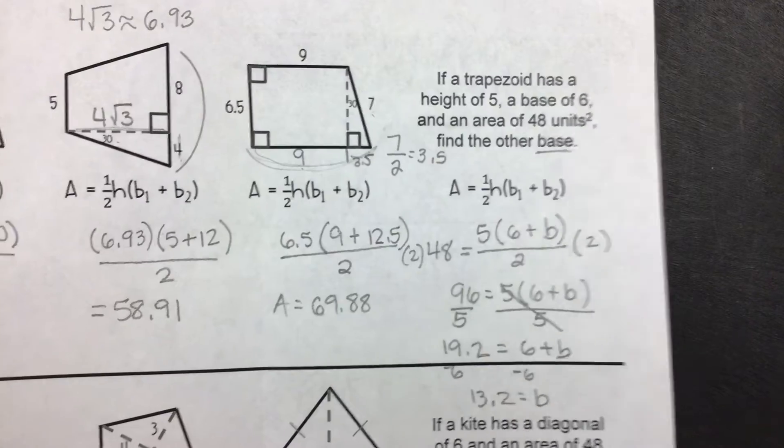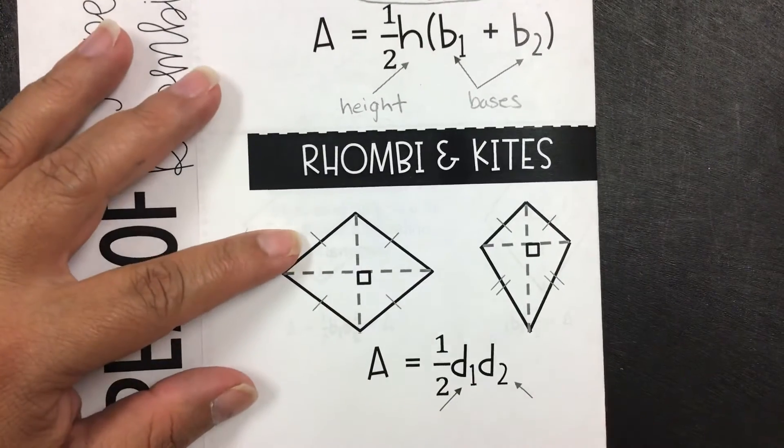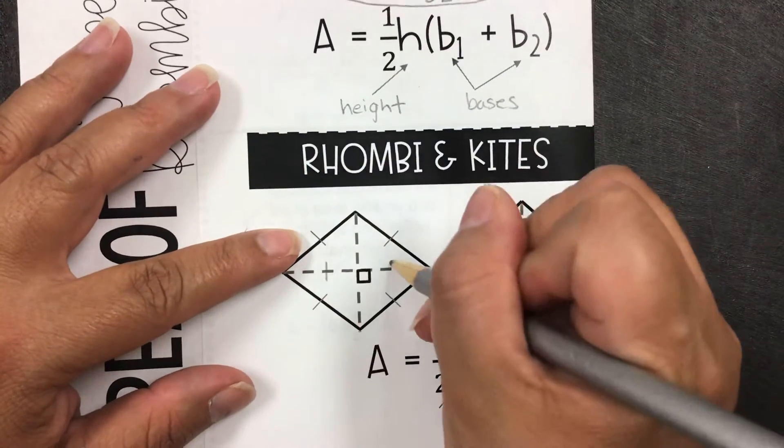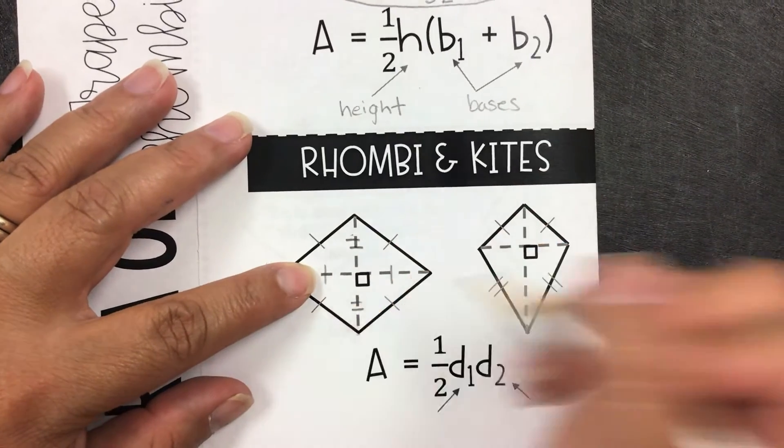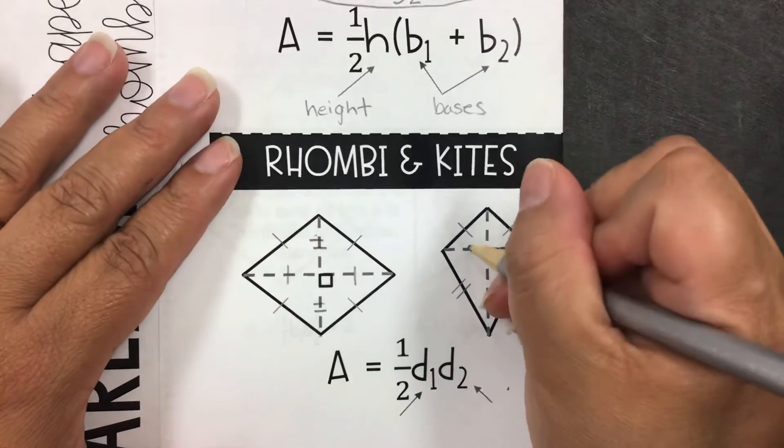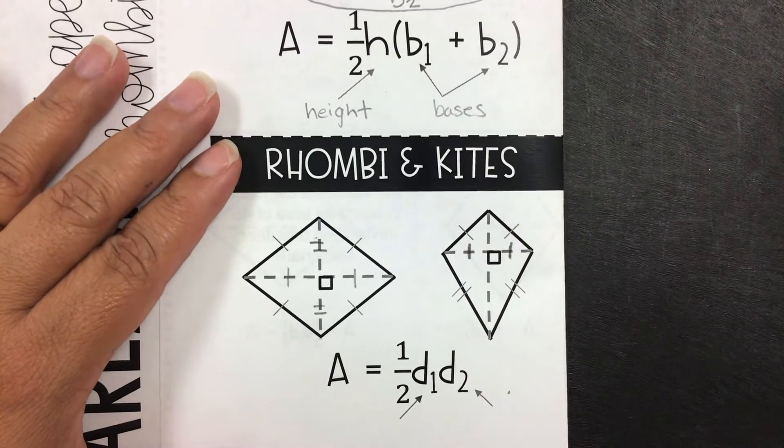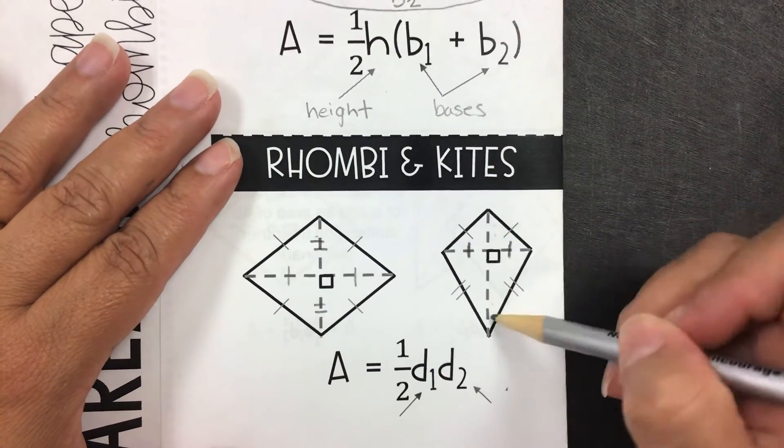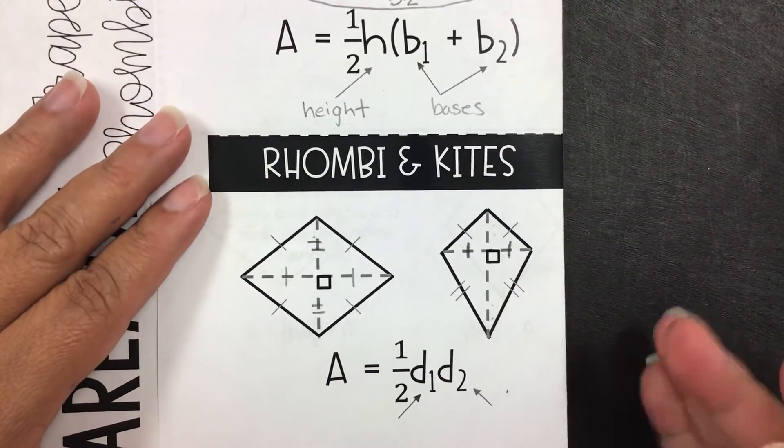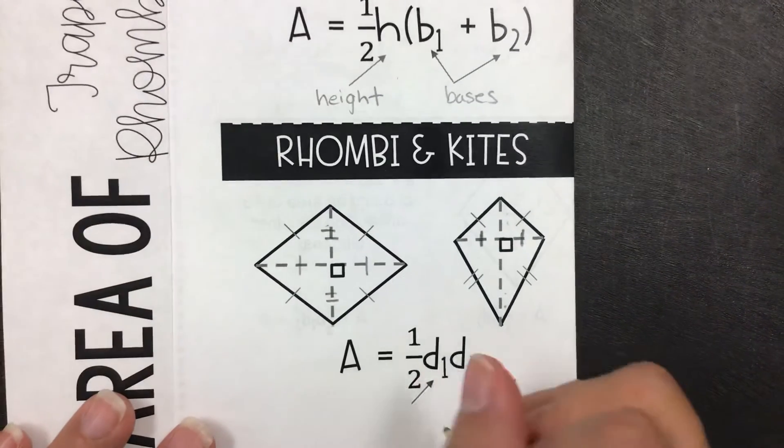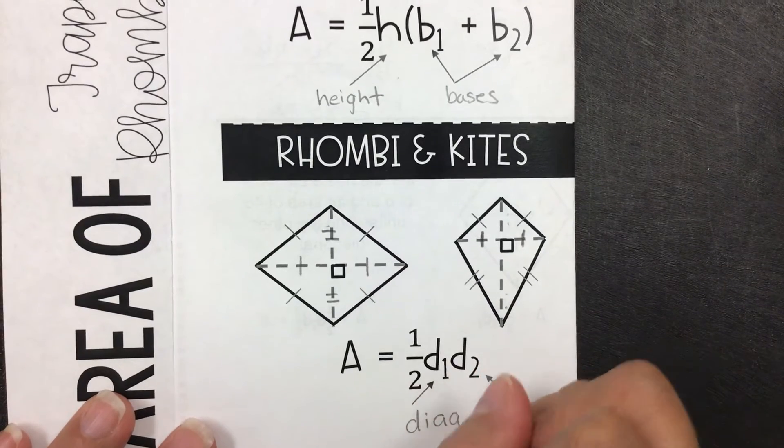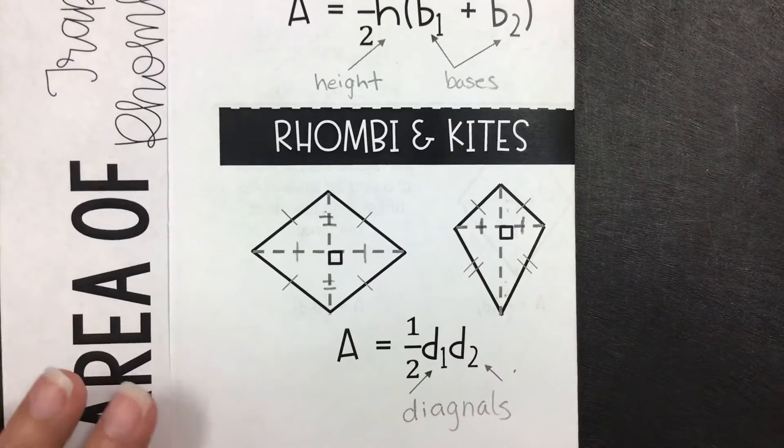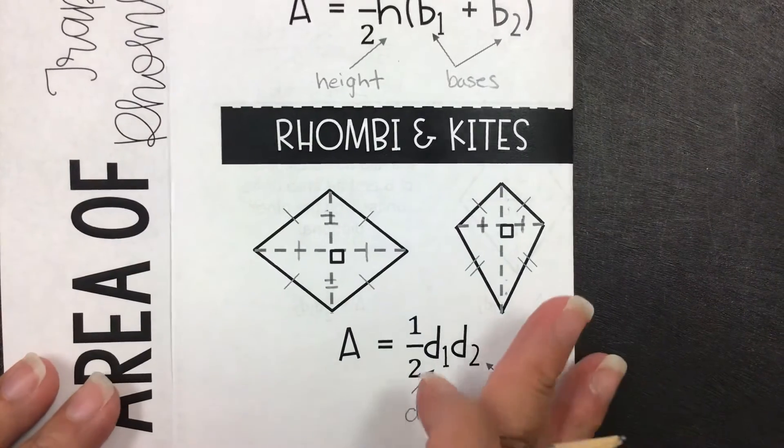For the next section, we have the kite and the rhombus. This is the rhombus. What I want to remind you of is that the diagonals are bisected. That means these two are equal and these two are equal. For a kite, the only one that's bisected is these two. These are not equal to each other, nor are they bisected. So these are the diagonals that are multiplied together and then divided by 2.